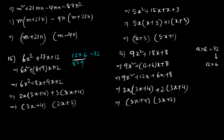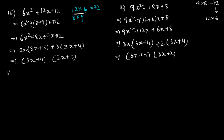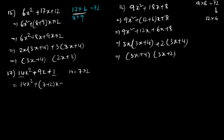Let's do the 17th question: 14x² + 9x + 1. From 14 I need to get 9, so the factors are 7 and 2, since 7 times 2 is 14. We split as 14x² + 7x + 2x + 1. Taking 7x common gives 7x(2x + 1), and taking 1 common gives 1(2x + 1), so the answer is (7x + 1)(2x + 1).